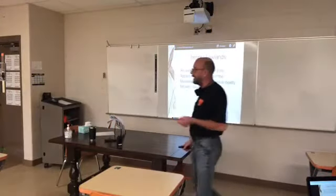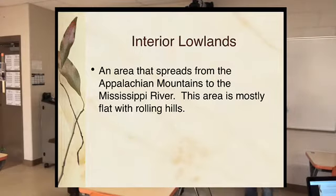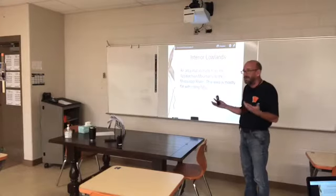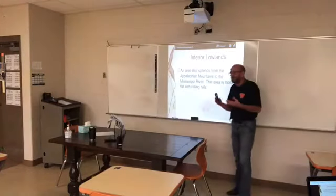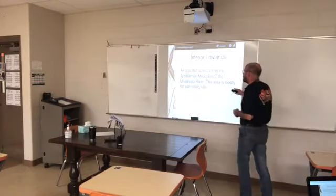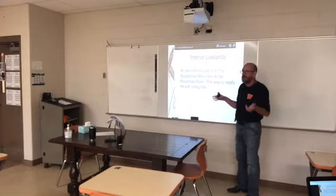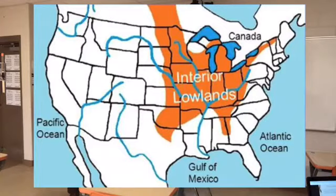The interior lowlands — you can imagine just from the name what this is going to be. Interior means inside the United States in the middle. Lowlands means it's going to be a very flat, low-lying area. It's mostly flat with a few rolling hills, and it's going to be between the Appalachian Mountains and the Mississippi River — kind of part of the Mississippi River Basin.